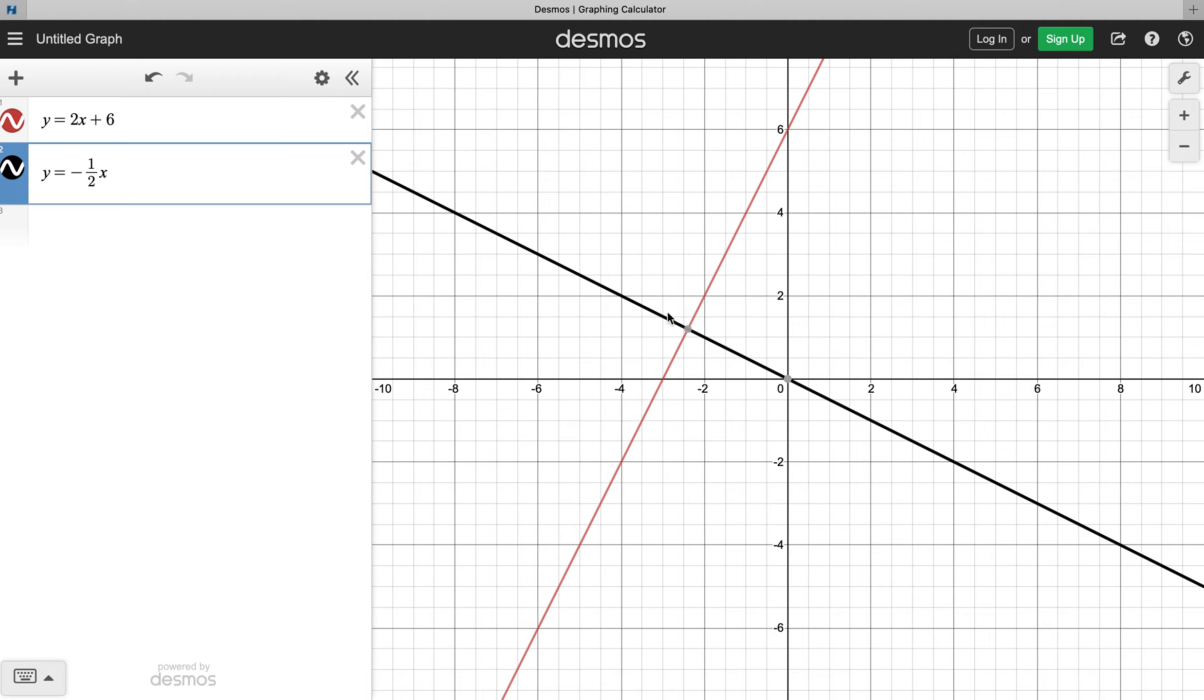it won't matter what the y-intercept is. As long as the slopes are opposite reciprocals, then the two lines will be perpendicular and they're going to form four different 90-degree angles there. Right? Because if they form 190, then with linear pairs and vertical angles, well, they all have to be 90.